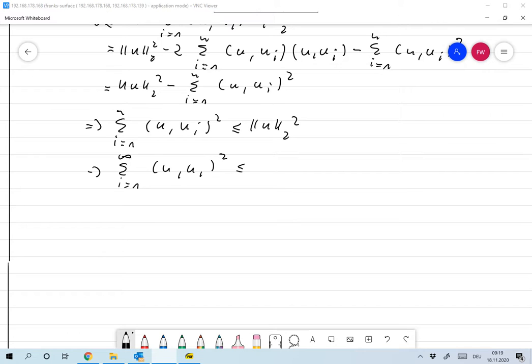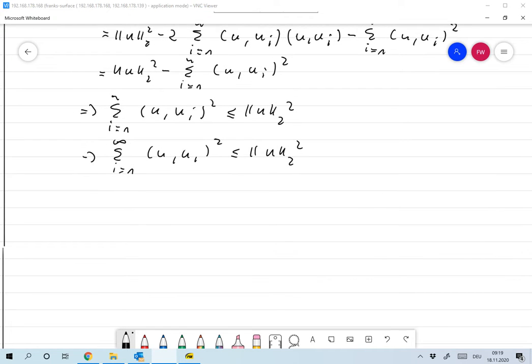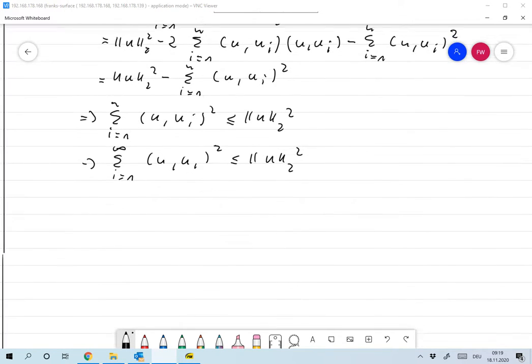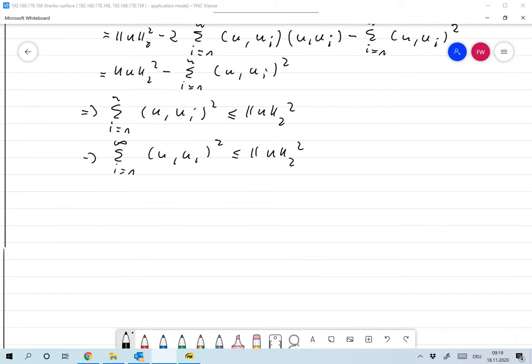Now since this is a monotonically increasing series that is bounded above, it must exist. Okay, and that's what we wanted to prove.